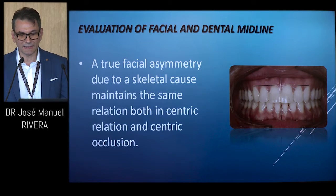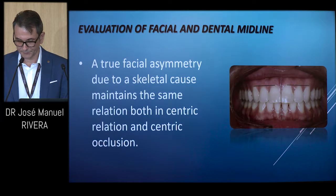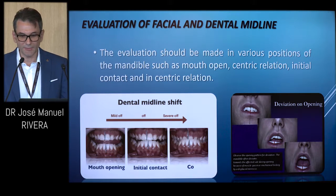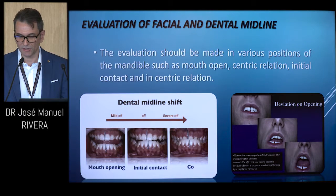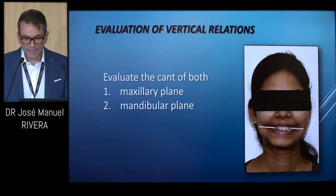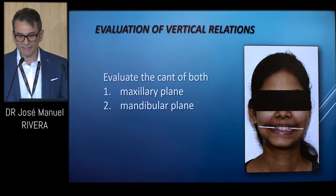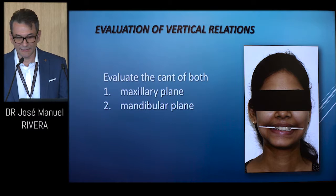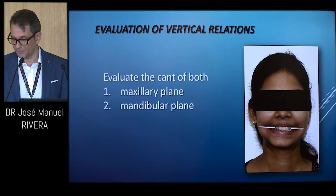A true facial asymmetry due to a skeletal cause maintains the same relation both at centric relation and centric occlusion. The dental midline should coincide with both arches with the facial midline. The evaluation of concordance between the midlines should be made in various positions of the mandible, such as mouth open, centric relation, and initial contact. The patient is made to bite on a tongue blade and assessed for parallelism with the interpupillary plane. The threshold for recognizing an occlusal cant is four degrees between the plane of occlusion and the interpupillary line.